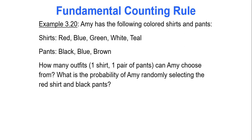So Amy has the following colored shirts and pants. She has shirts that are red, blue, green, white and teal, and pants that are black, blue and brown. So how many outfits, where an outfit consists of one shirt and one pair of pants, can Amy choose from? What is the probability of Amy randomly selecting the red shirt and black pants?